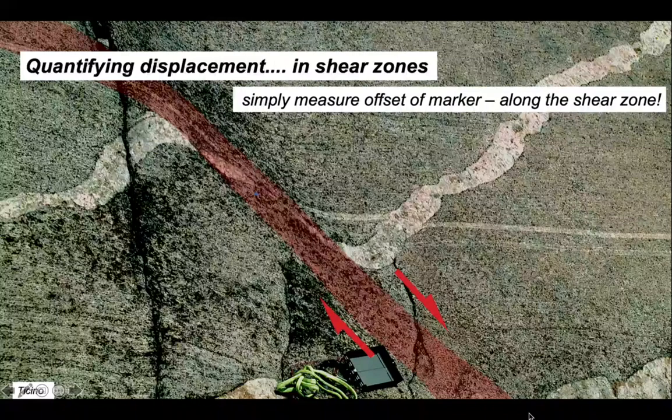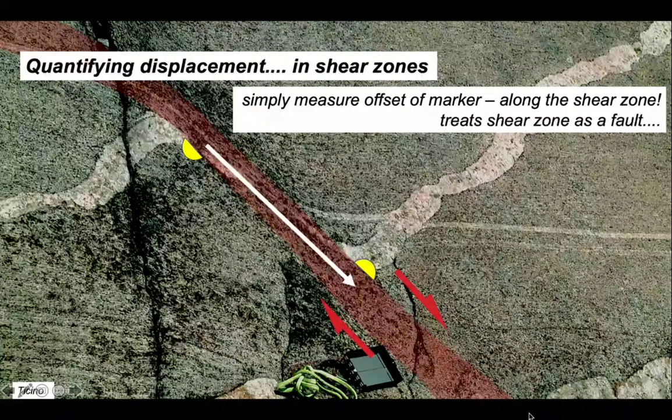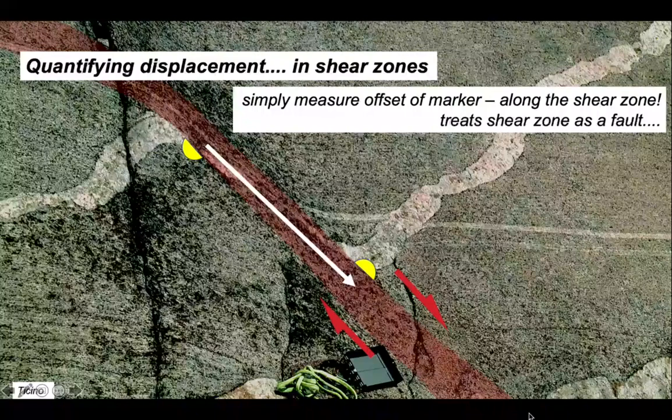So to find the displacement, we just see where the aplite intersects the hanging wall and the foot wall of our shear zone, and measure the displacement along the shear zone itself. So very quickly, we can quantify the displacement as long as we can correlate a marker such as this aplite across the shear zone.